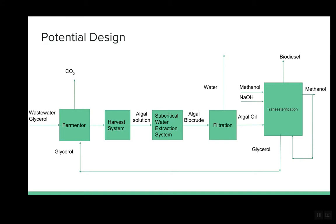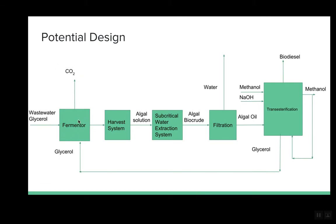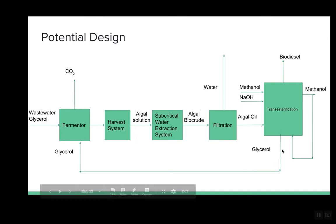Here is our block flow diagram illustrating our proposed design. Wastewater and glycerol are fed into a fermenter where all glycerol is converted to carbon dioxide, as it is assumed to be the only carbon source. The remaining liquid solution — microalgae cells in water — is harvested in a centrifuge. The oil is extracted from the cells using subcritical water extraction. This biocrude is fed into a filtration system to remove excess water and output algal oil, which is documented to be 93% triglycerides, and is then fed into the transesterification process. This sodium hydroxide-catalyzed reaction between triglycerides and methanol forms glycerol and biodiesel.